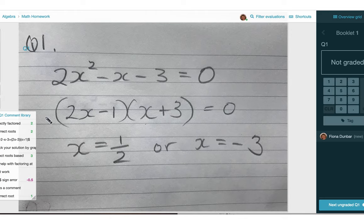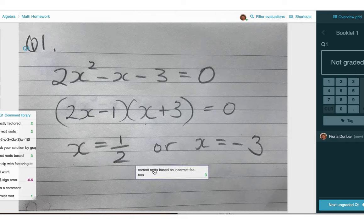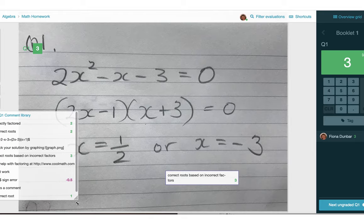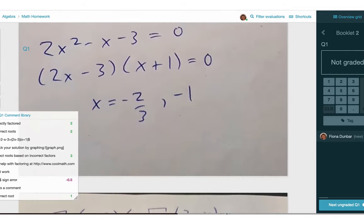So to use one, I simply drag the comment to the student's paper. So in this case, I might grab the comment 'correct roots based on incorrect factors,' and I can expand this view here to see the entire comment. Moving on to the next one,